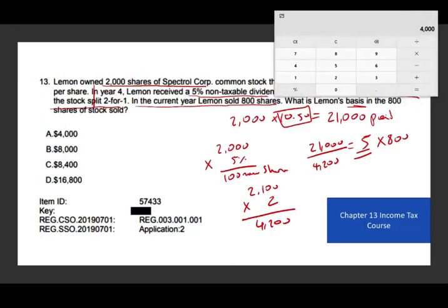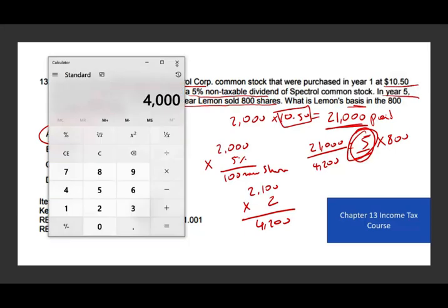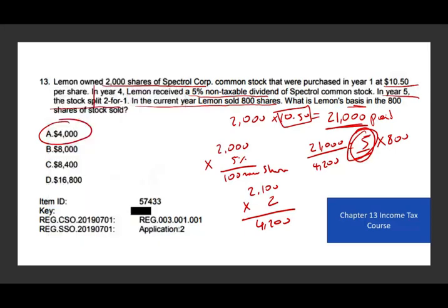Therefore, the answer is $4,000. You invested the original amount and received more shares, so your basis per share goes down. It's less than half of the original $10.50 per share because you doubled the shares in the split and received an extra 5% from the stock dividend. The answer of $4,000 is correct.